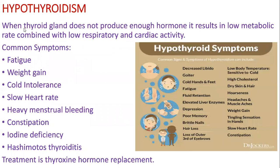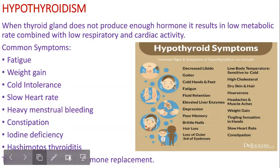When the thyroid gland does not produce enough hormone, it results in low metabolic rate combined with low respiratory and cardiac activity. The symptoms include fatigue, weight gain, cold intolerance, low heart rate, heavy menstrual bleeding, constipation, and iodine deficiency.